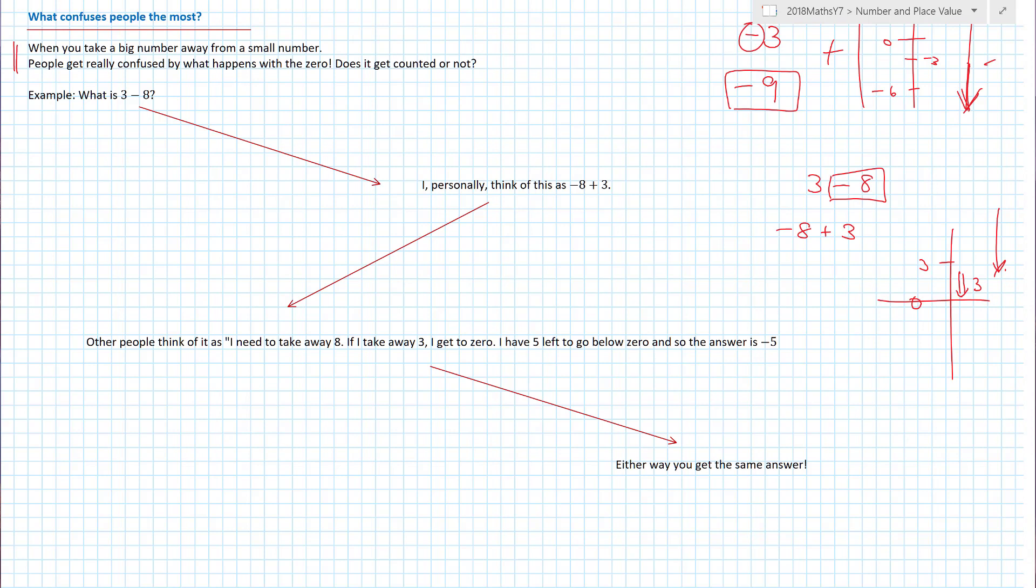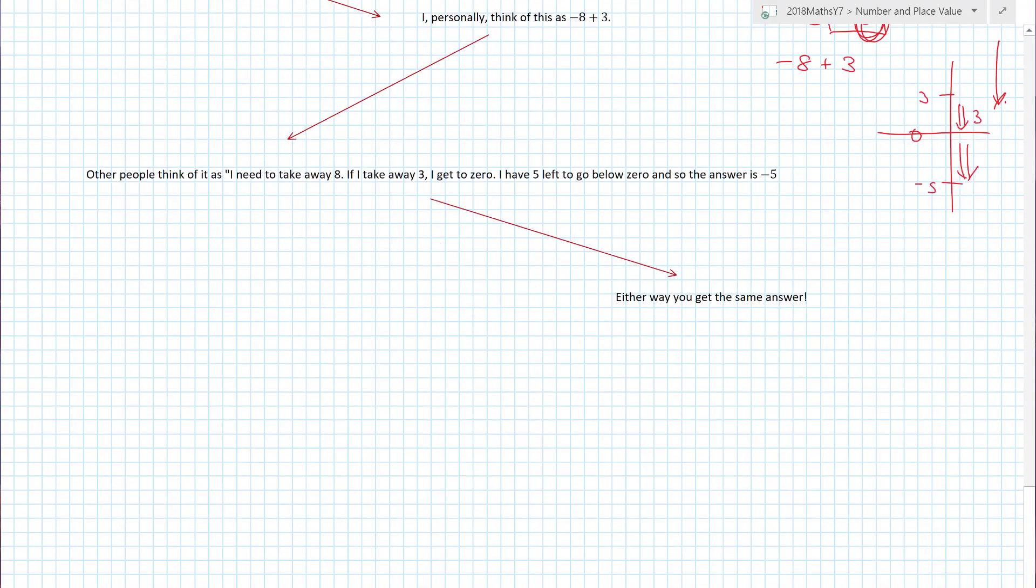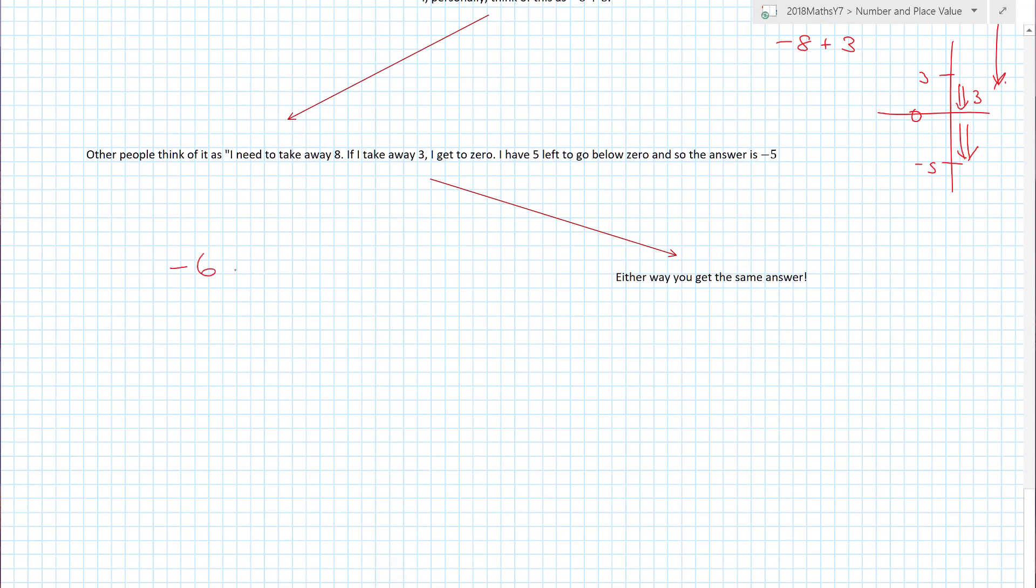So to get to zero, I've got to move three places. How many places in total am I moving? Eight. But I've already used three of them. So how many have I got left? Five. So that must mean that actually I've got to move five places lower than zero, which is minus five. And that's breaking things up. Another example: plus six minus twelve.